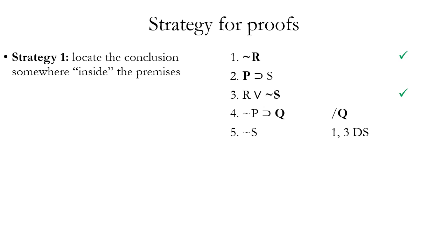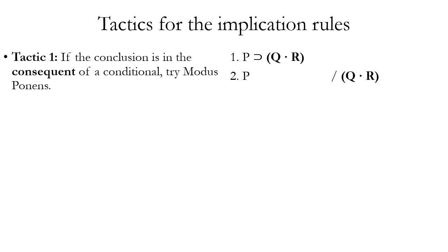After proving not S, the next step is to use not S and line two with modus tollens to prove not P, citing lines two and five. Then, directing attention to unchecked lines four and six, we use those with modus ponens to prove Q. We never check off the last line of the proof because that's our main conclusion — what we're stopping at, having derived what we set out to prove.